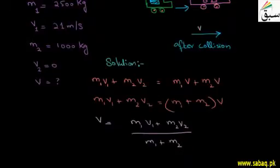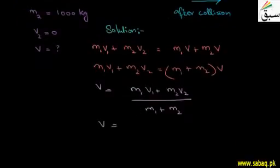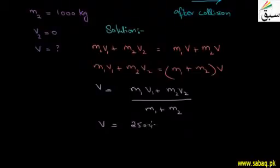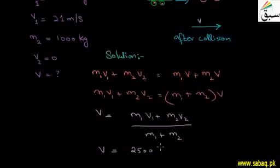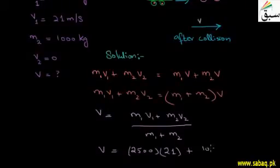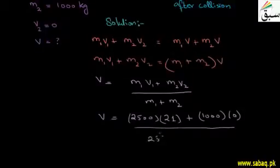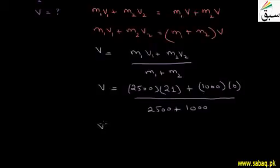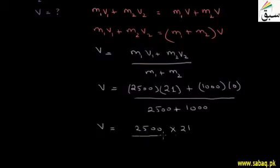Now we input the values. M1 = 2500, V1 = 21 m/s, M2 = 1000, and V2 = 0. So V = (2500 × 21 + 1000 × 0) / (2500 + 1000) = (2500 × 21) / 3500. When we simplify this, the answer comes out to 15 meters per second.